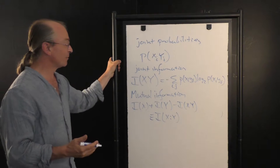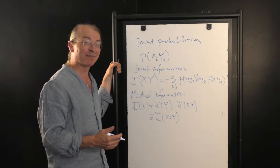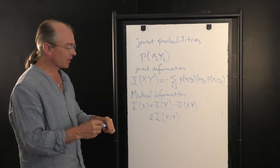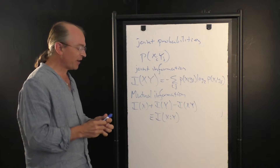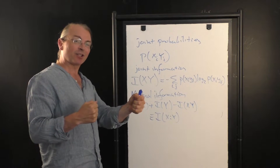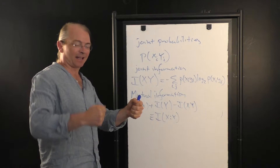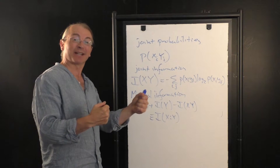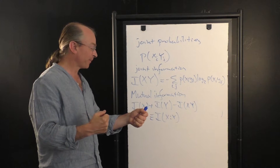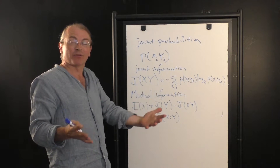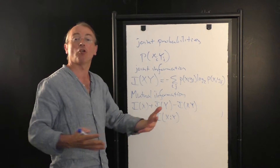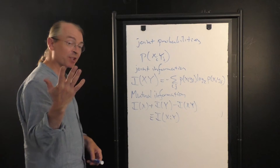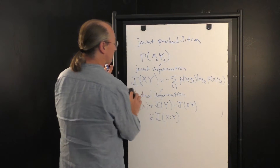I argued — not very convincingly, I believe — that this quantity measures the amount of information that I get about X if I look at Y. It also measures the amount of information I get about Y if I look at X. And it also measures the amount of information that X and Y, in some sense, hold in common. So let's explore that notion a little further.